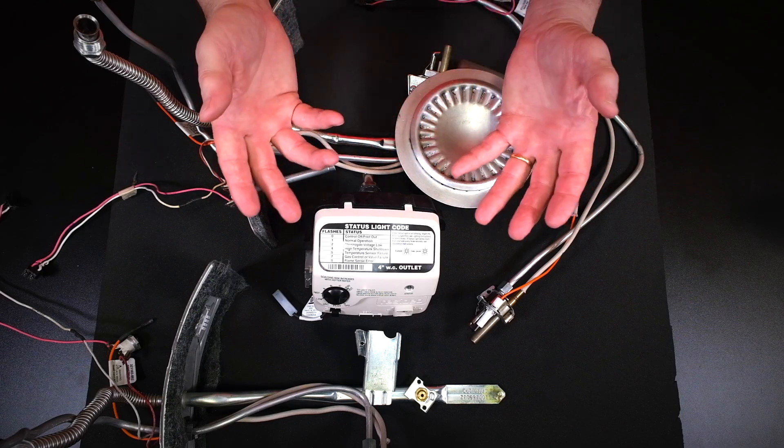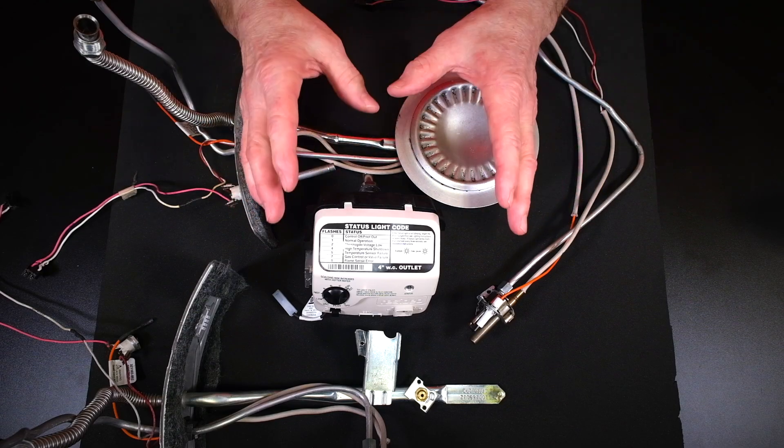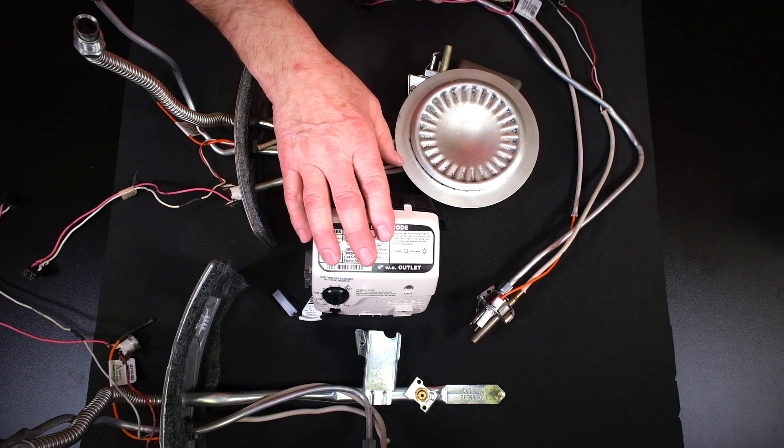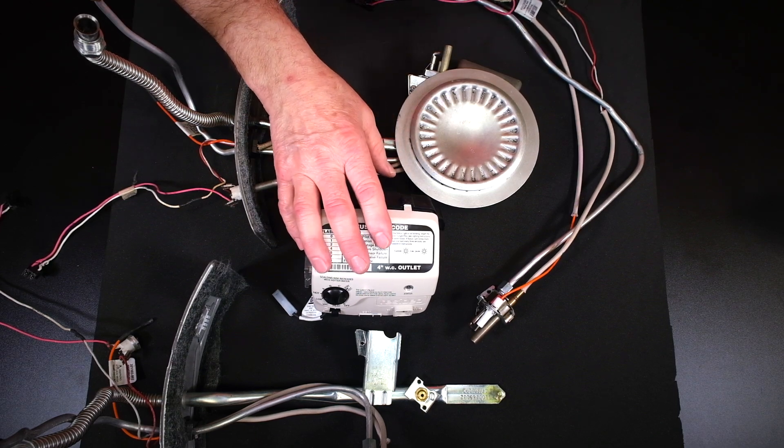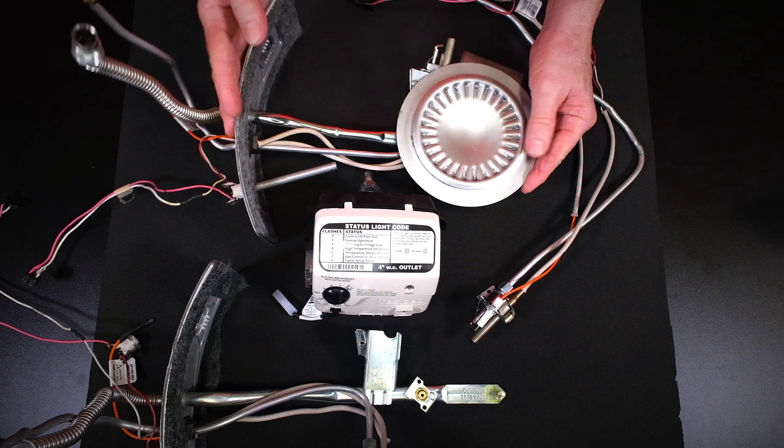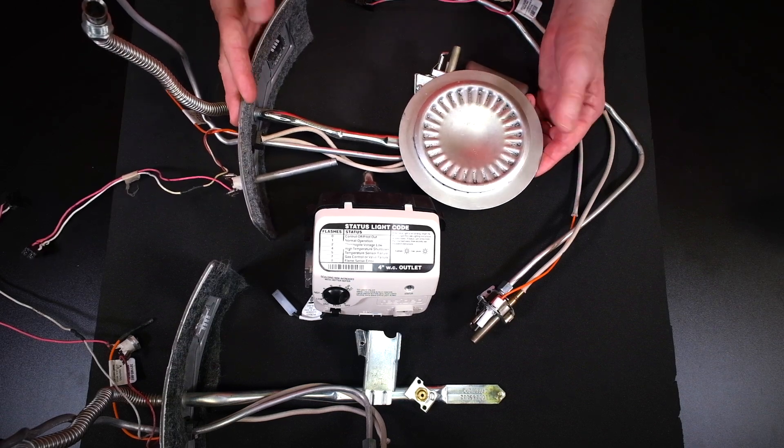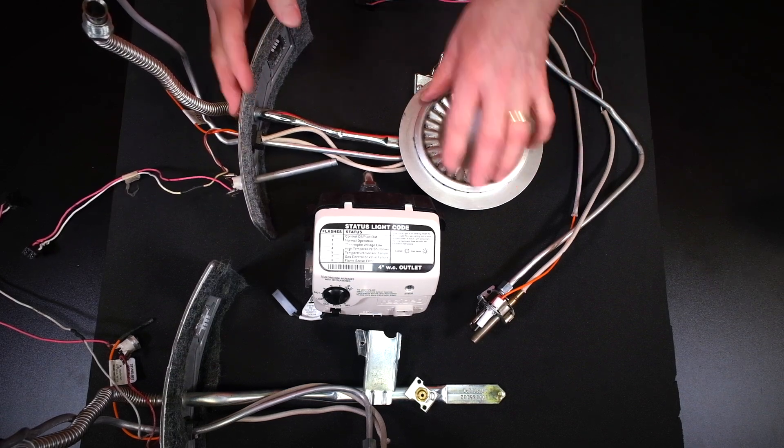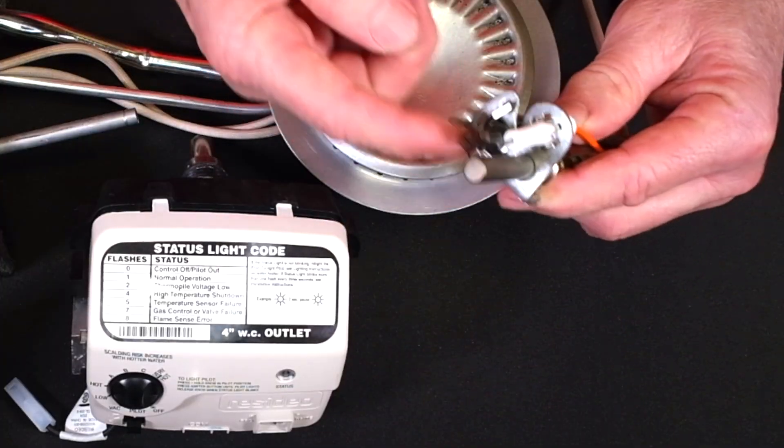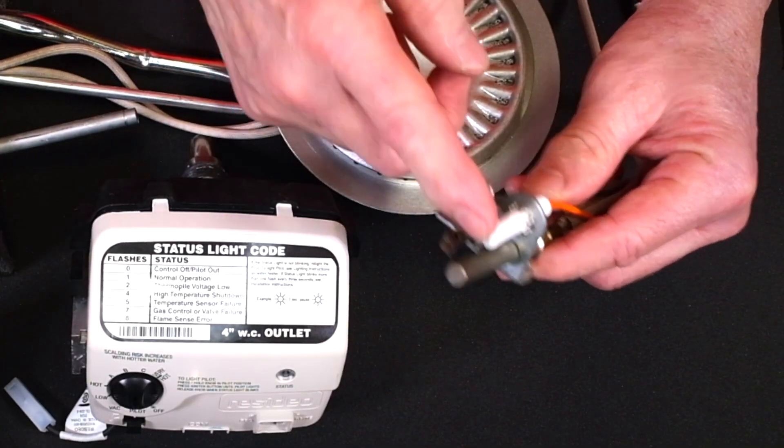These are all the parts in your tank-type gas water heater that help heat the water. You have your gas control valve, which is the brain of the system. You have your burner, which is where the flame comes out and heats the water. And then you have your safety controls: your pilot light, your thermopile, and your igniter.